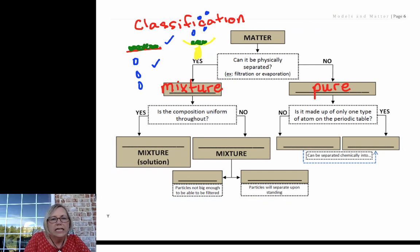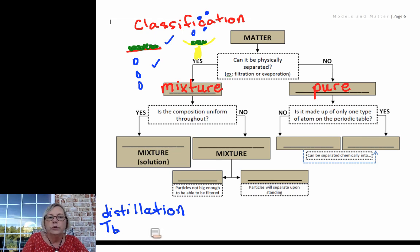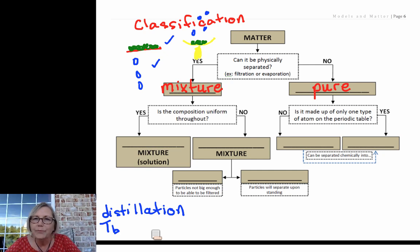Now another common one with which you should be familiar is distillation. In distillation we would boil the mixture, and based on differences in boiling point—the temperature of boiling would be the boiling point—we could separate that mixture. So distillation is another way, but all of these are physically separating. No bonds are being broken and formed as we do this type of procedure. That's what we can do with mixtures.